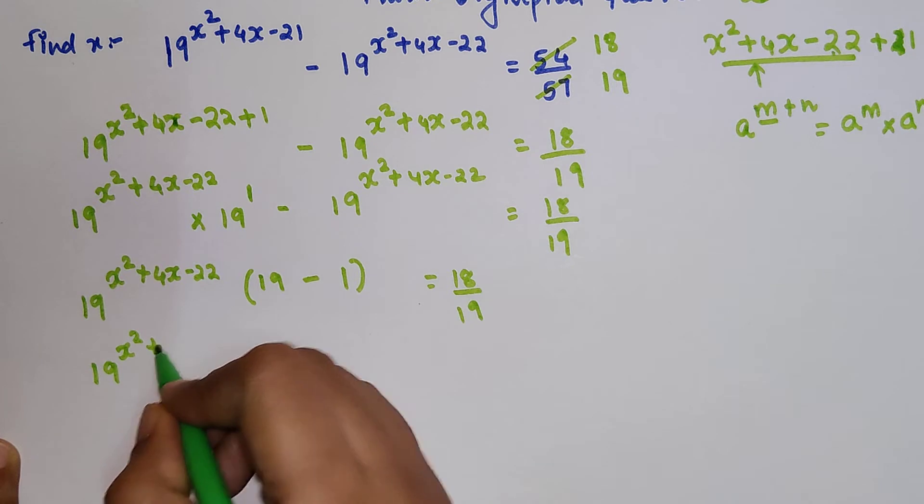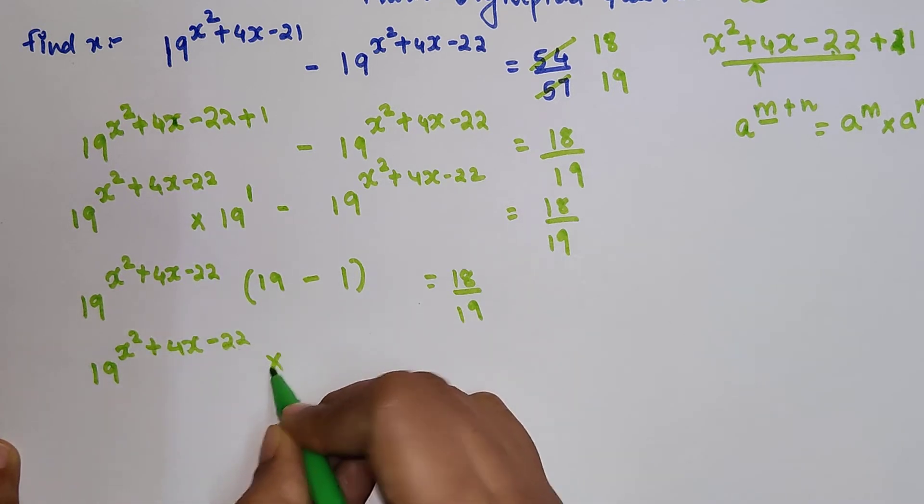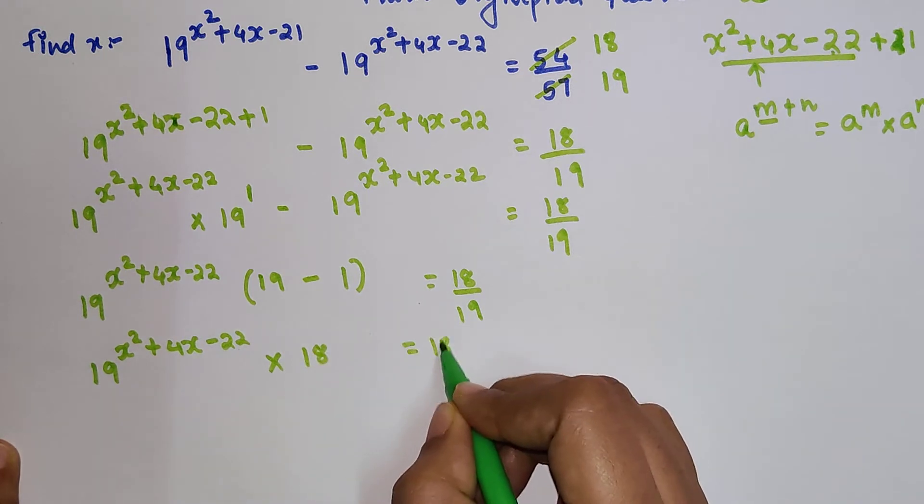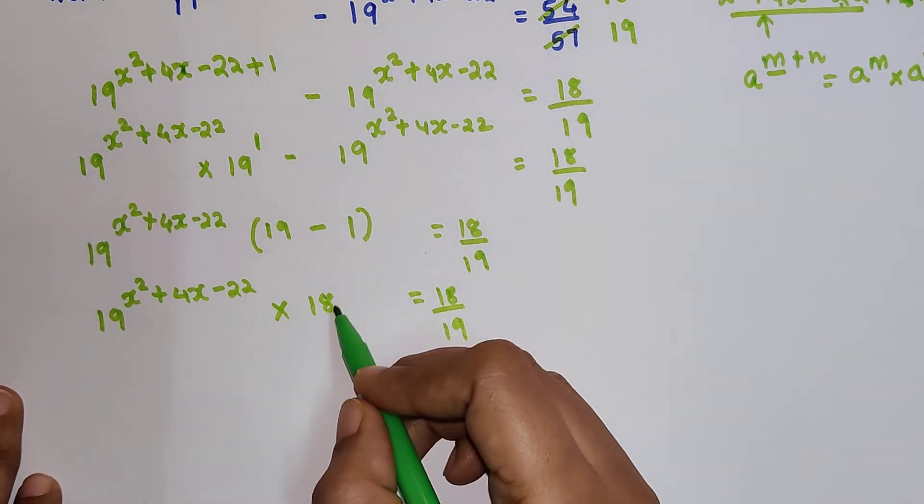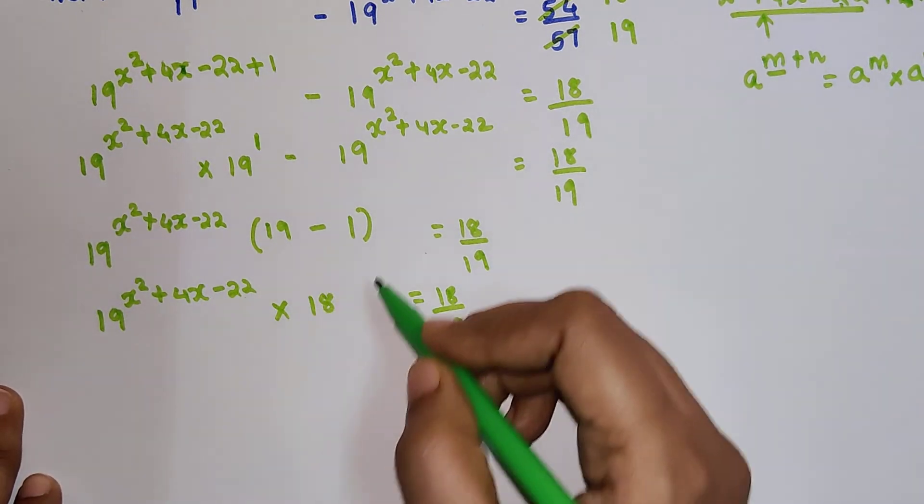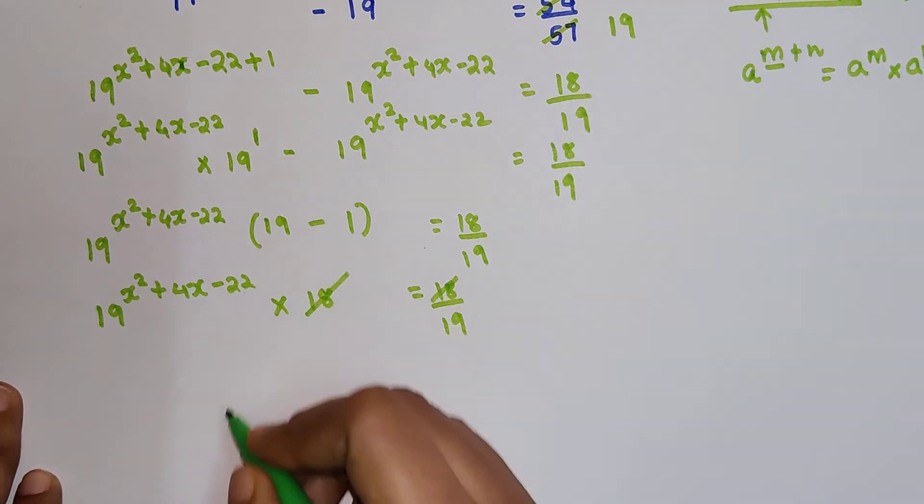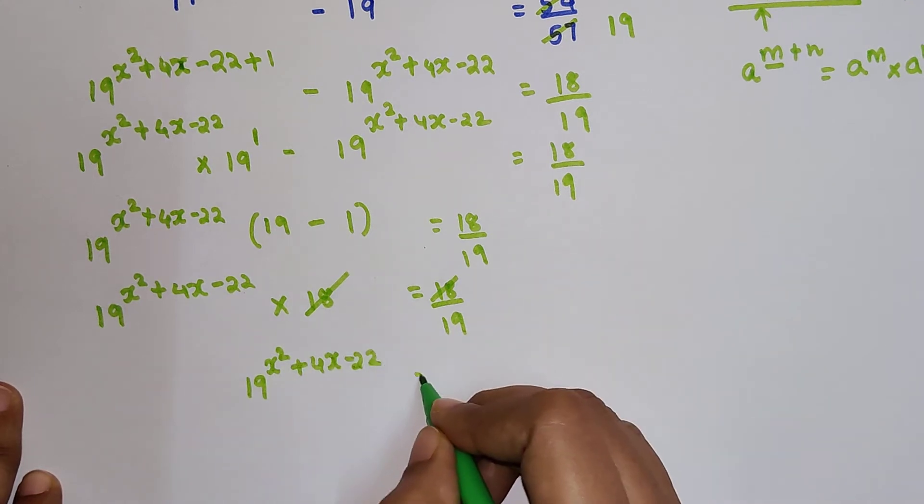So we have 19^(x²+4x-22) × 18 = 18/19. Now, if I take this 18 to the other side, the 18s will cancel, so I am left with 19^(x²+4x-22) = 1/19.